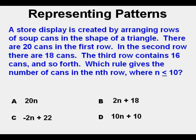Let's go on to the next problem. A store display is created by arranging rows of soup cans in the shape of a triangle. There are 20 cans in the first row, 18 cans in the second row, 16 cans in the third row, and so forth. Which rule gives the number of cans in the nth row where n is less than or equal to 10?